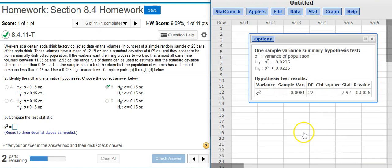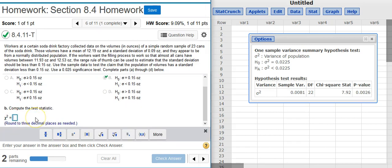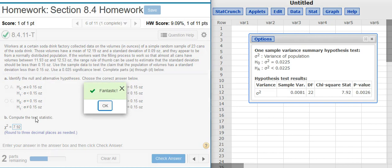I hit Compute, and here's my chi-squared test statistic, which I can put here in my answer field. Fantastic!